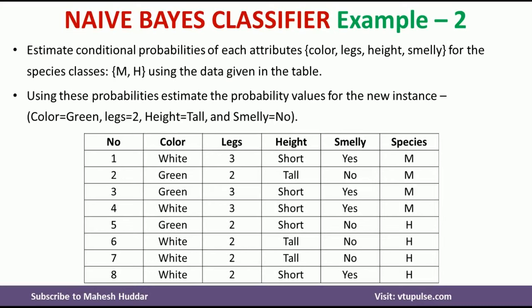In this case, we have been given a dataset with eight instances and four attributes: color, legs, height, and smelly. Species is the target label with two possible outcomes, M and H.